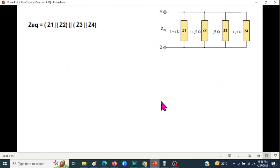Now when there are more than two elements in parallel, we try to solve two at a time. So here also, I'll solve the first two Z1, Z2 in parallel, and then Z3, Z4 in parallel, and then the result in parallel to get the answer.